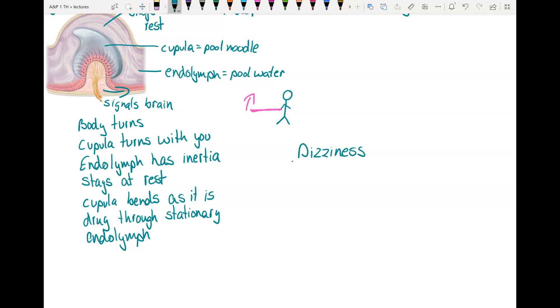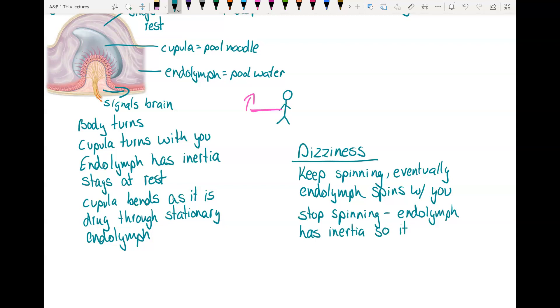Now this also is what causes dizziness. What basically happens is if you keep spinning, eventually the endolymph will spin with you. But then you stop spinning, but because the endolymph has inertia, it keeps spinning. And then because it keeps spinning and now your cupula is still, but the endolymph is spinning, it bends your cupula. And so you feel like you're still spinning, even though you're not. That's what dizziness is.